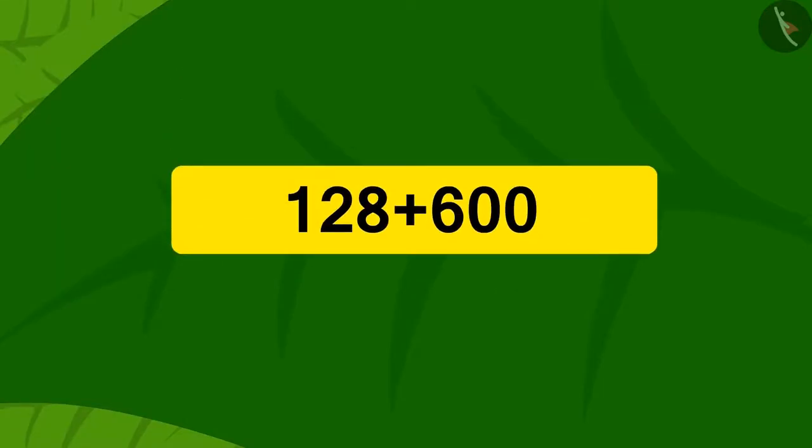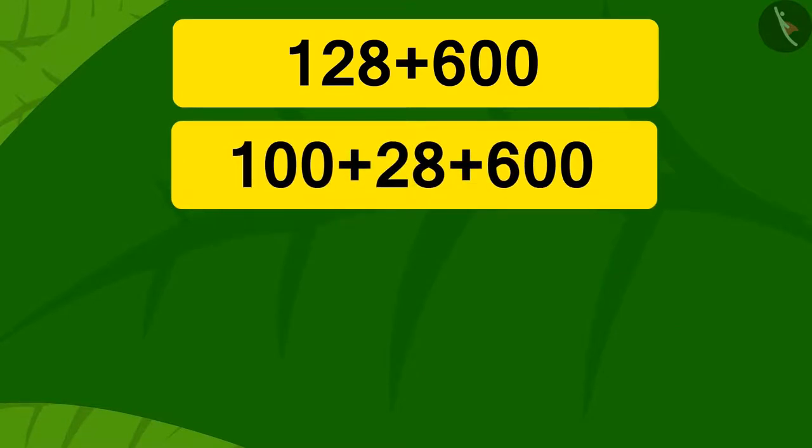This was the next puzzle. Children, can you find an easy way to solve this puzzle quickly? Come, let's do it together. We can write 128 as the addition of two numbers: 28 and 100.